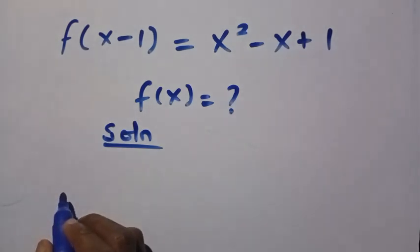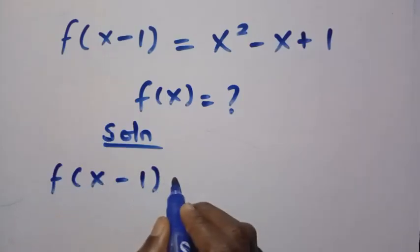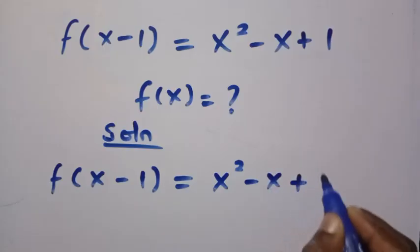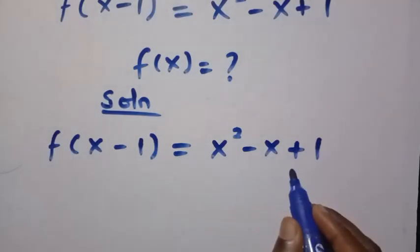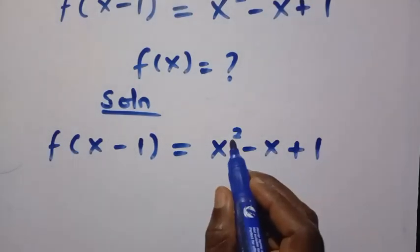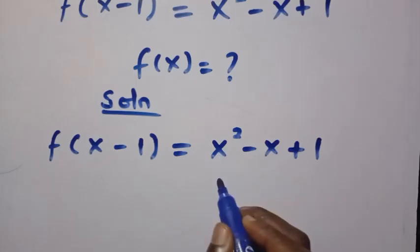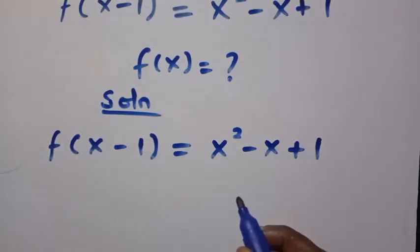The domain of this function allows any real number. So we have f of x minus 1 equals x squared minus x plus 1. Let's manipulate this. This side is a quadratic as we have the power of 2 at this variable. And can we factorize this? That is the first question.